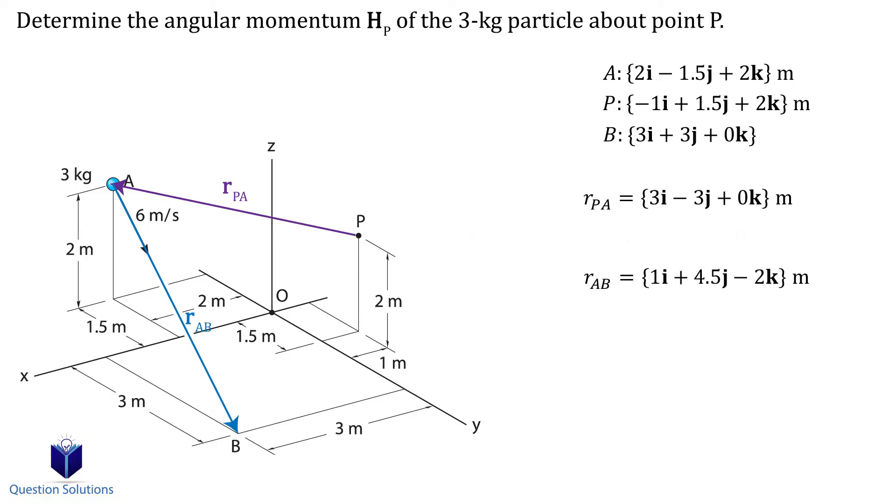Since we're trying to express our velocity in Cartesian form, we also need a unit vector. Hopefully this is familiar to you from your statics class. So to find the unit vector, we first need to find the magnitude of our position vector.